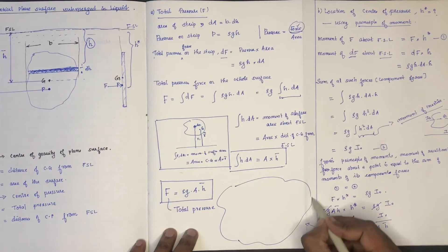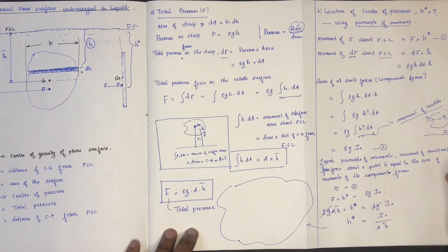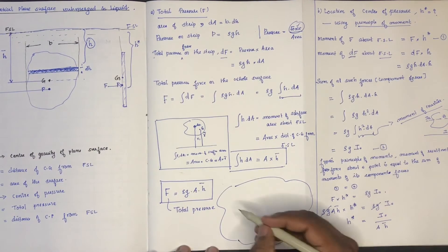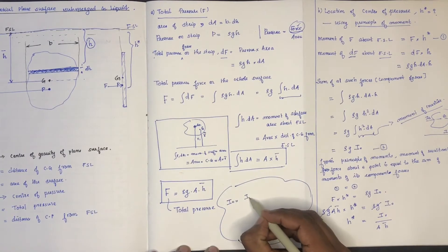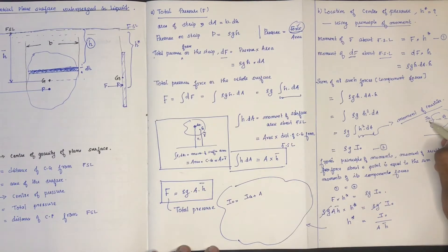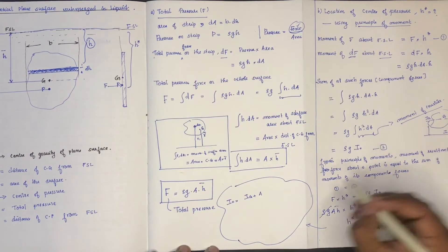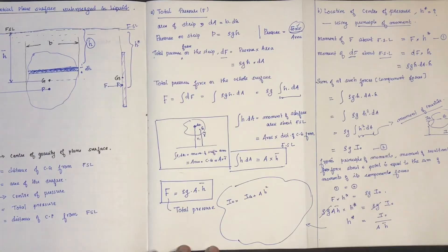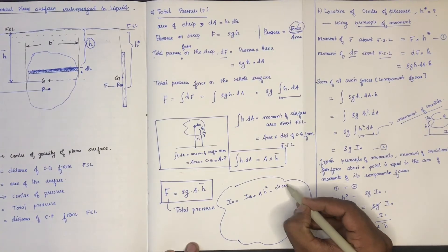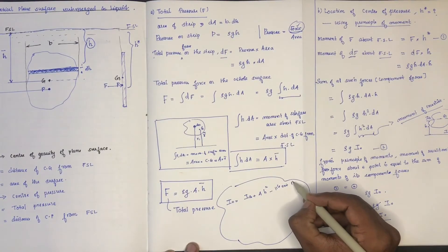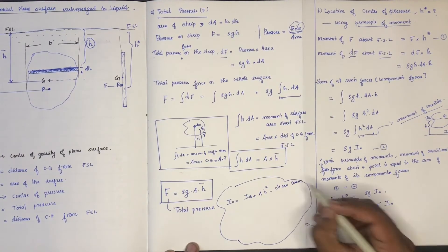I₀ is actually equal to IG plus A into h-bar squared, by the parallel axis theorem from mechanics.